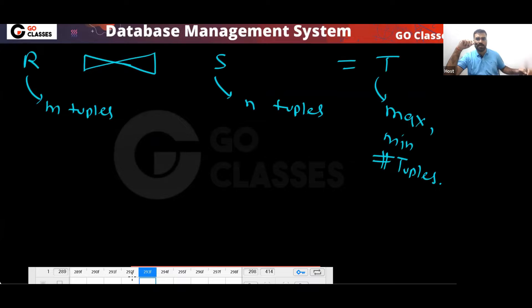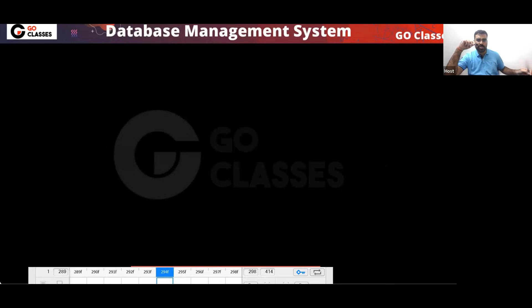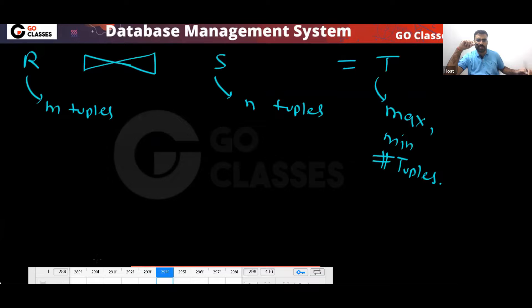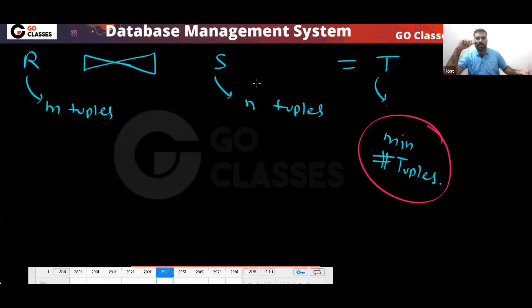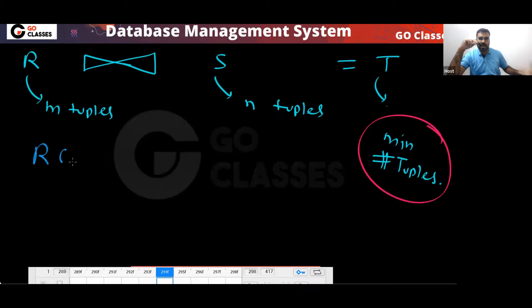In which situation will you get the minimum number of tuples? If I want minimum number of tuples, what should match? Nothing should match. Let's assume R has attributes A, B and S has attributes C, D. Will we get the minimum number of tuples in this situation?